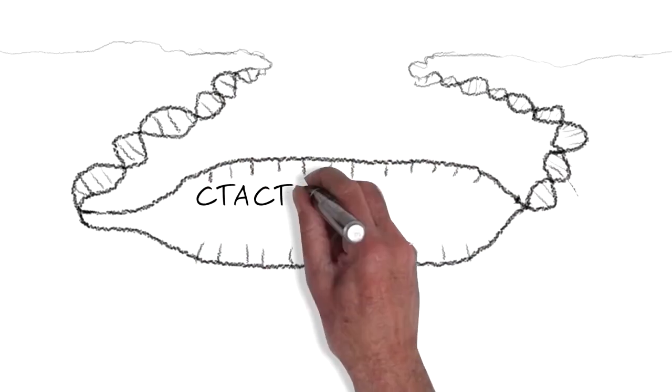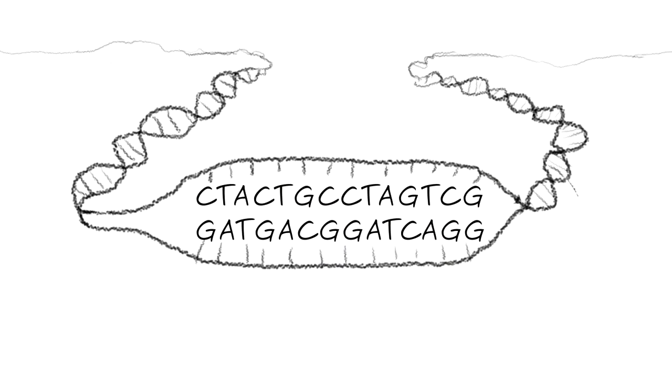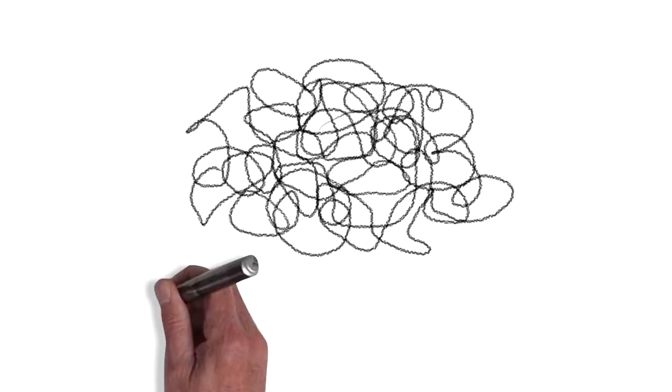With billions of letters making up each person's manual of instructions, our DNA is huge and is coiled up to fit inside every cell in our body.